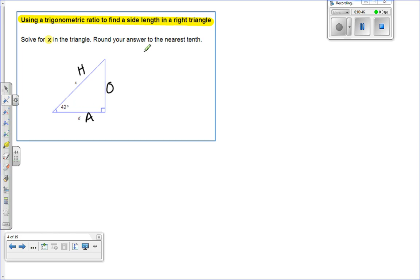So it's going to be one of these three: SOH, CAH, or TOA. It's one of those three.